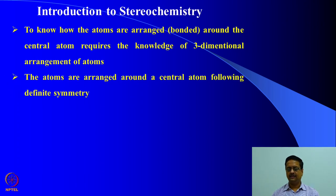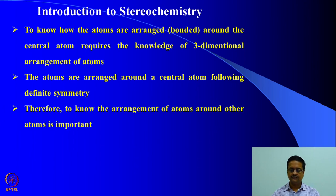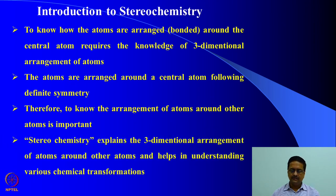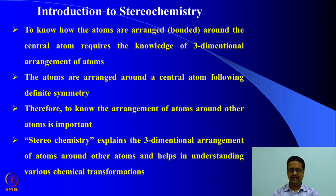To interpret spectroscopic data and to establish the molecule, we need to know how the various atoms are bonded to a central atom. We need to know the stereochemistry — that is, the three-dimensional arrangement of atoms around a central atom — to identify the molecule and its geometry. Atoms arranged around a central atom follow a definite symmetry, and stereochemistry explains these chemical transformations.